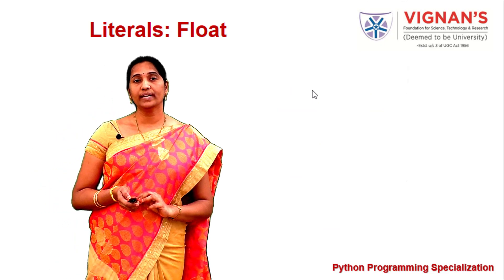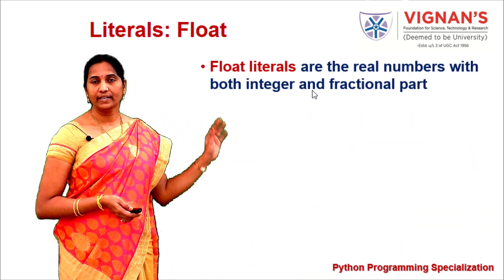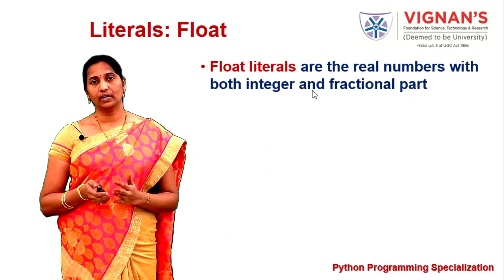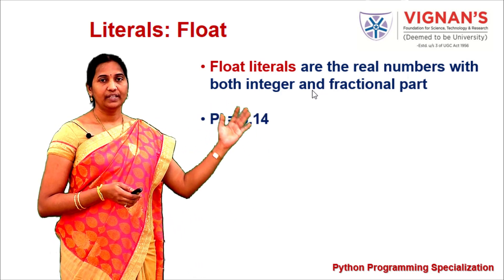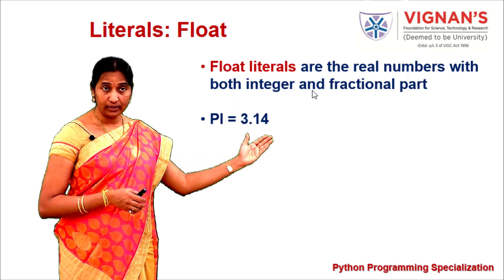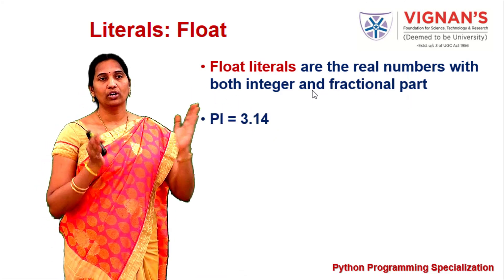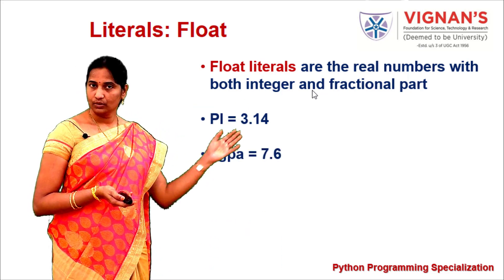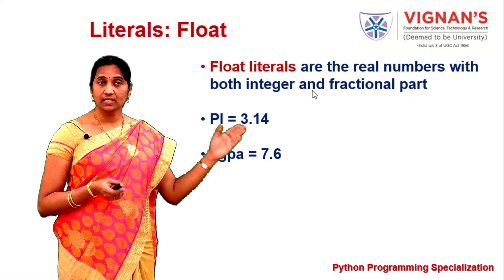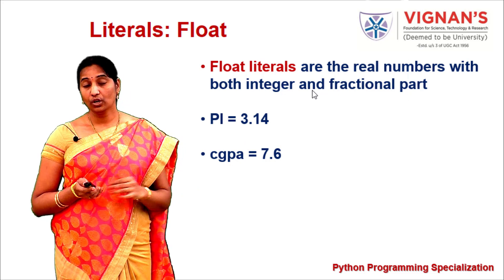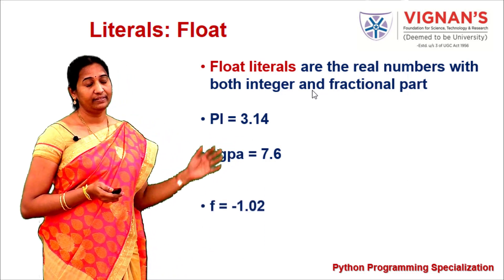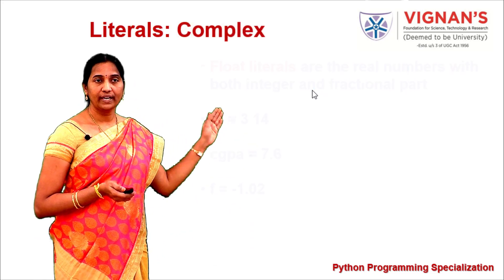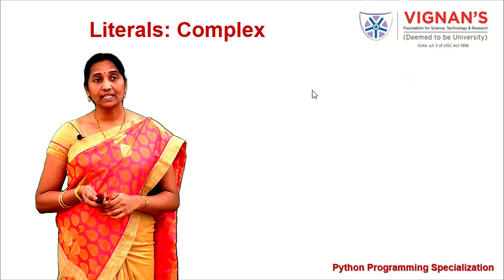Float literals are real numbers which have two parts: an integer part and a fractional part. For example, pi = 3.14, where 3 is the integer part and 14 is the fractional part. Consider a student's CGPA of 7.6 — 7 is the integer part and 0.6 is the fractional part. They can also be negative, like -1.02.